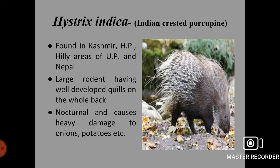Next rodent species is Hystrix indica, the Indian crested porcupine. It is native to states like Kashmir, Himachal Pradesh, hilly areas of UP and Nepal. It is a large rodent with well-developed quills on its back. This species is nocturnal and causes heavy damage to vegetables and crops like onions and potatoes.